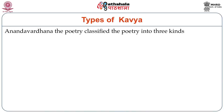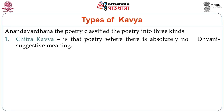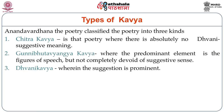Anandavardhana classifies poetry into three types. Chitra Kavya is poetry with absolutely no Dhvani — no suggestive meaning — and is considered the lowest. Gunibhuta Vyangya Kavya is where the predominant element is the figures of speech but not completely devoid of suggestive sense — this is the madhyama variety of Kavya. And the third kind, Dhvani Kavya, is wherein the suggestion is prominent — this is called Uttama Kavya. So: Uttama, Madhyama, and Adama Kavya.